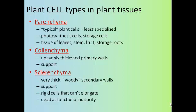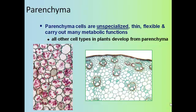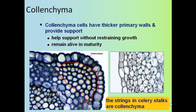Parenchyma cells are unspecialized, which means they can develop into a lot of different kinds of plant cells — in a way, they're sort of like the stem cells of the plant body. Collenchyma have thicker cell walls and make those stringy structures that you see when you eat a piece of celery. When you break celery apart, you'll see little strings coming off, and those are made primarily of collenchyma cells.